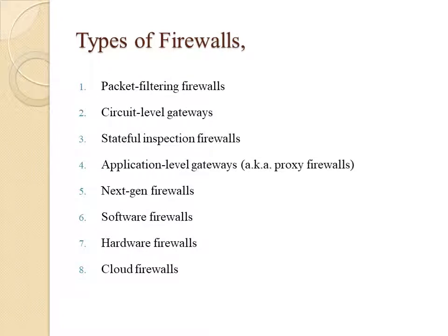Firewall types can be divided into several different categories based on their general structure and method of operation. The main 8 types of firewall are: packet filtering firewall, circuit level gateway, stateful inspection firewall, application level gateway, next generation firewall, software firewall, hardware firewall, and cloud firewall.